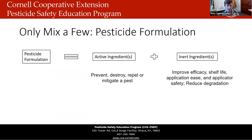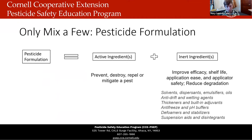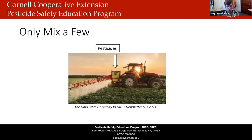Inert ingredients can do things like reduce degradation from sunlight or help penetrate the active ingredient into a weed. They include things like solvents, anti-drift and wetting agents, antifreeze, pH buffers, and defoamers. When you're tank mixing two or more pesticides together, given how complicated formulations can be, it makes sense that you might see incompatibility — because it's often the inert ingredient that poses those incompatibility issues.